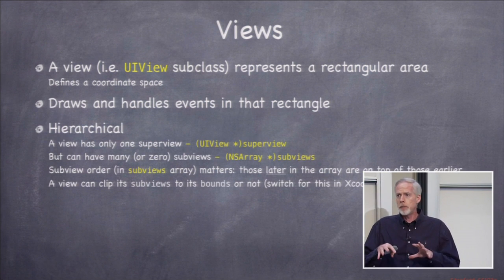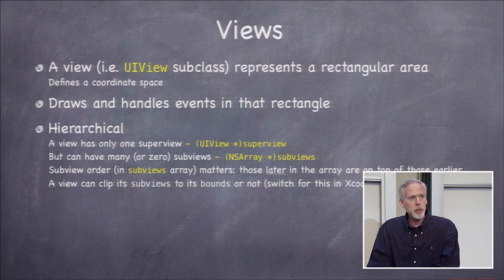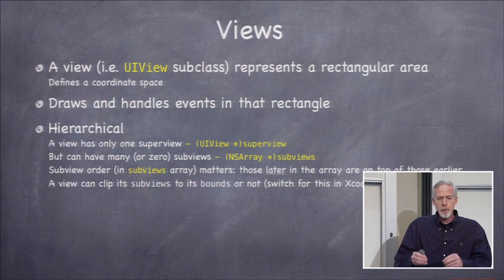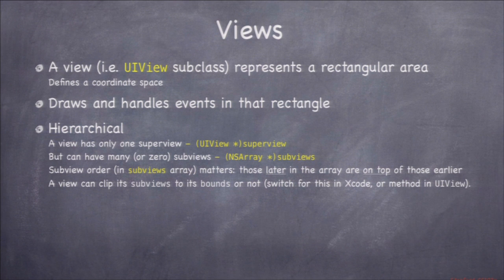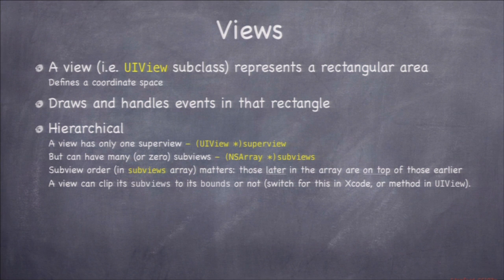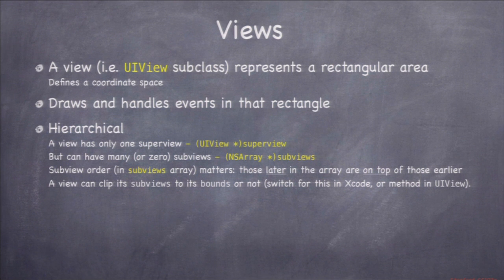Views are hierarchical — you can have views inside views inside views. Every view only has one superview, but a given view could have many subviews, and those subviews are just rectangles. They can overlap; they're not required to be tiled or separate. They're completely freeform subviews of a given view. The order of the subviews matters because they can be transparent.